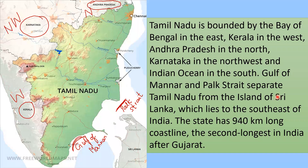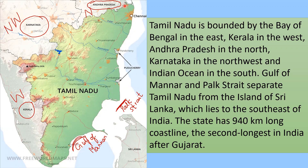Location and size of Tamil Nadu: Tamil Nadu is bounded by the Bay of Bengal in the east, Kerala in the west, Andhra Pradesh in the north, Karnataka in the northwest, and the Indian Ocean in the south. The Gulf of Mannar and Palk Strait separate Tamil Nadu from the island of Sri Lanka, which lies to the southeast of India. Our state has a 940 kilometers long coastline.